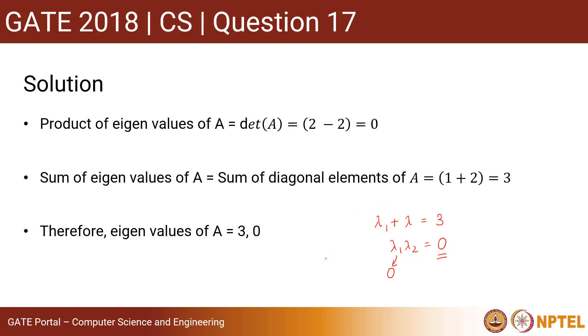So, the another eigenvalue should be 3 minus 0 equals to 3. So, we get the eigenvalues of A as 3 and 0. So, the largest eigenvalue of A is 3. So, answer will be 3. Thank you.